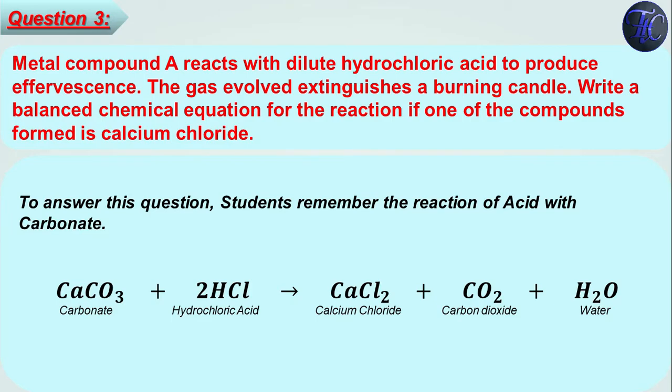To answer this question, first we have to identify which reaction produces carbon dioxide gas. In the reaction of carbonate with acid or hydrogen carbonate with acid. We have to write a chemical reaction to form calcium chloride. So we have to do the reaction of calcium carbonate with hydrochloric acid.